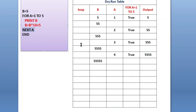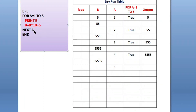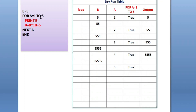Next a: increment the value of a by 1 — before it is 4, now it will be 5. After incrementing, it goes back to the for loop to check the condition: is 5 in the range of 1 to 5? Yes, it is in range, so the condition is true again.